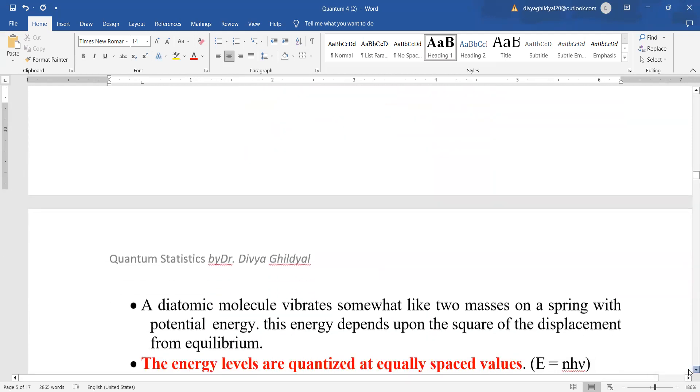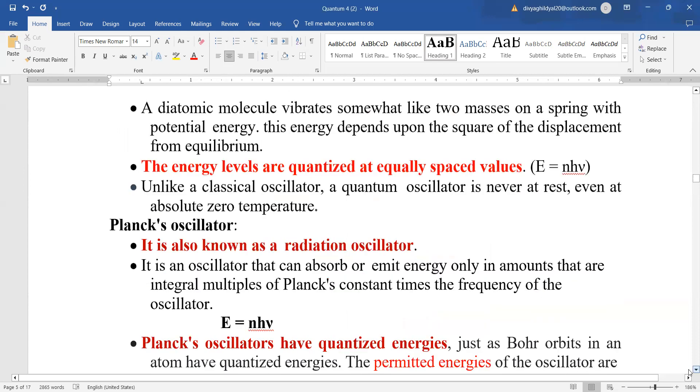The quantum oscillator is based on this principle only. A diatomic molecule vibrates somewhat like the vibration of a spring with potential energy. This energy depends upon the square of displacement from equilibrium. E is equal to half kx square, if you remember the formula.